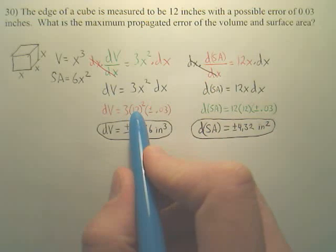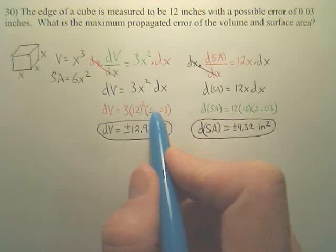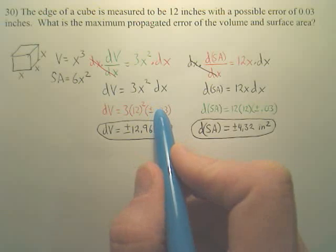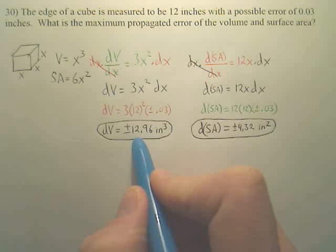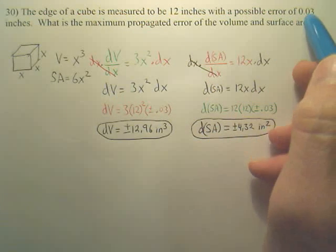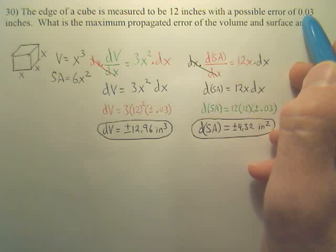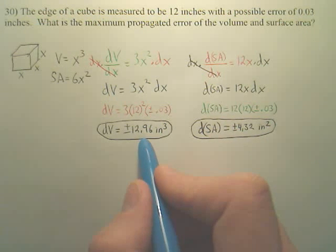So I plug in 12 for my x measurement. I plug in my propagated possible change of x, and when you do all the math, it ends up being your volume could be off by almost 13 cubic inches. Just by a simple, small little calculation mistake, measurement mistake, your whole volume can be off by quite a bit.